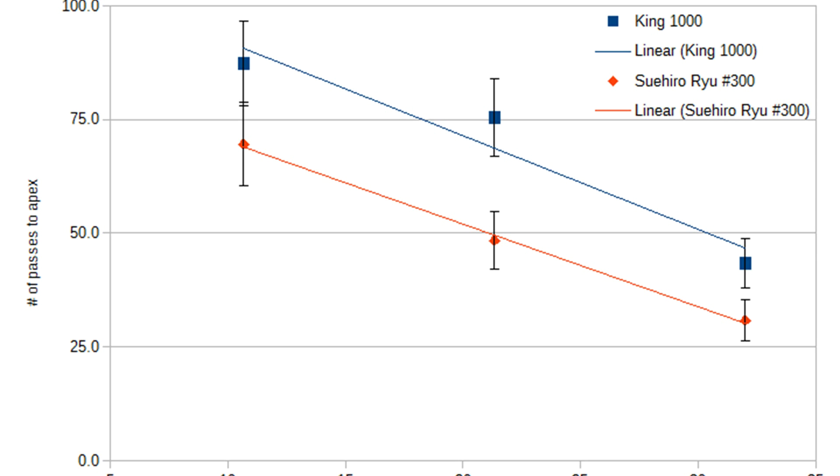The cutting speed was determined by the amount of passes to apex on a basic carbon steel chisel. The apex of the chisel was cut back, then the chisel was brought to a true apex, and this was repeated many times at different pressures on the two stones.